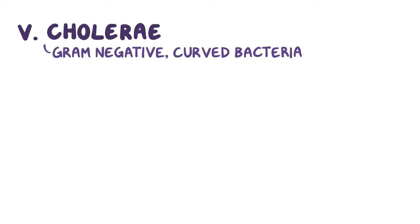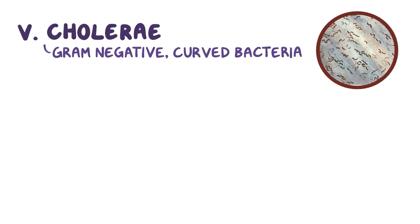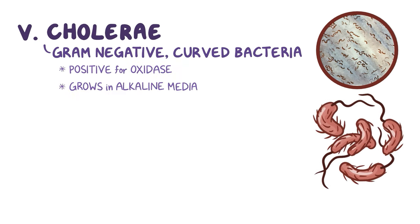V. cholerae is a gram-negative curved bacteria which looks like little red or pink comma shapes on a gram stain. It is positive for oxidase and grows in alkaline media.